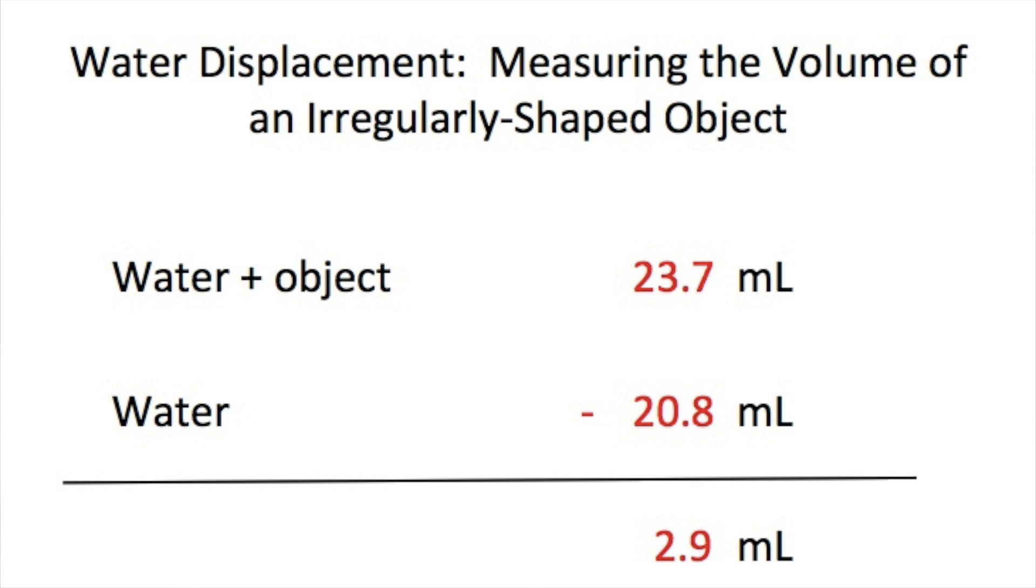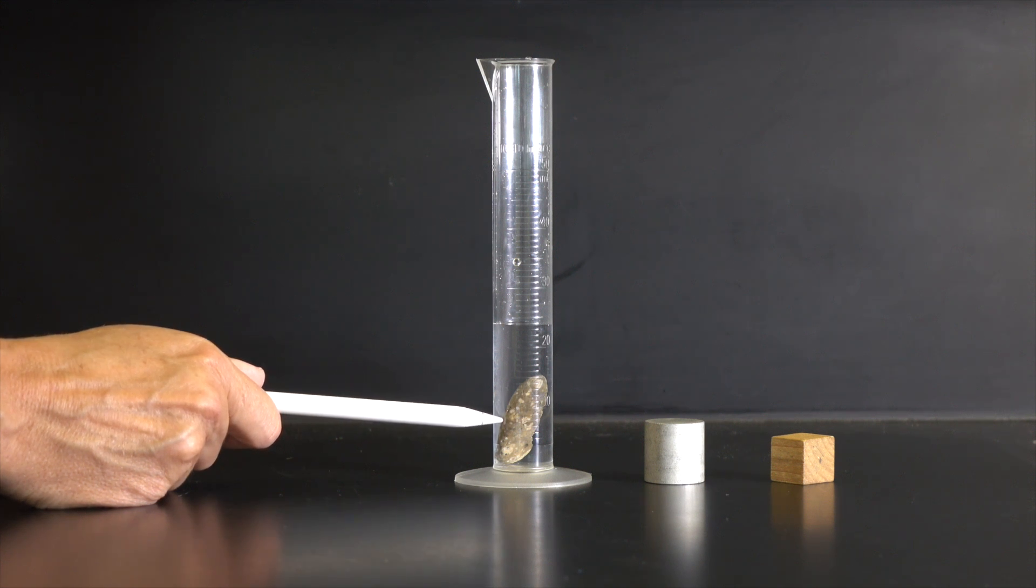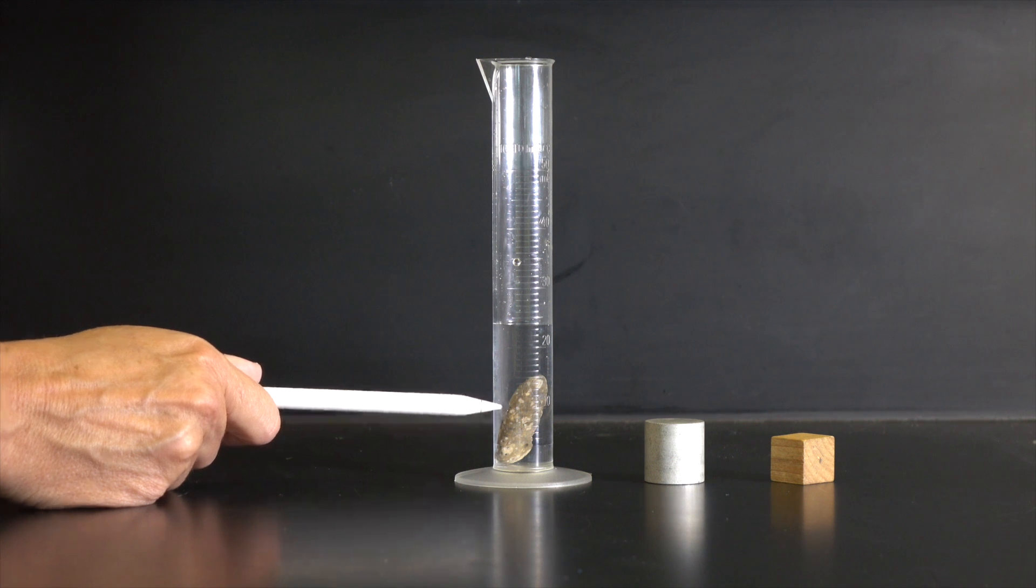This number represents the water that was pushed out of its original position in the bottom of the cylinder by the solid and is equal to the volume of that solid.